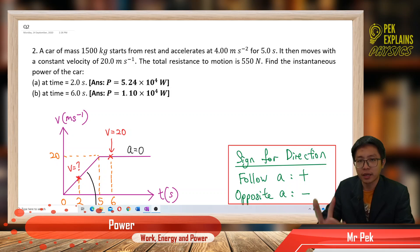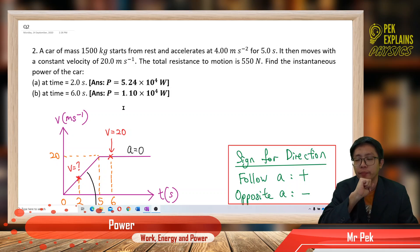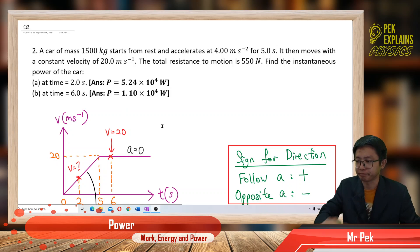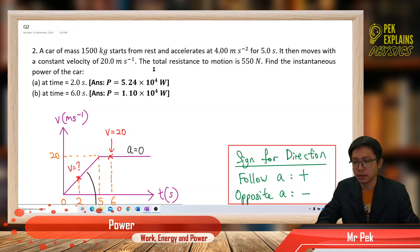Hi, now we are in the second question for subtopic power. This question is concerned more on instantaneous power. A car of mass 1,500 kilograms starts from rest and accelerates at 4 meters per second squared for 5 seconds. It then moves with a constant velocity of 20 meters per second. The total resistance to motion is 550 newtons. Find the instantaneous power of the car at time 2 seconds and also at time 6 seconds.